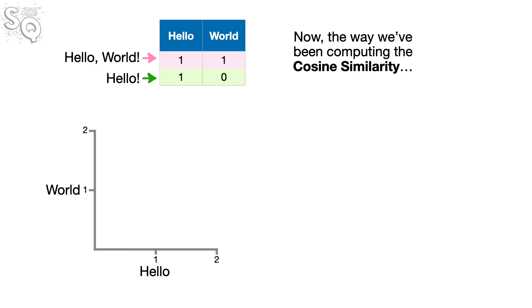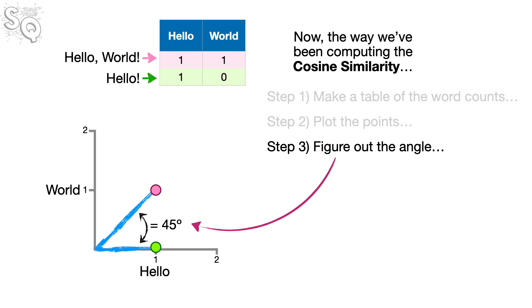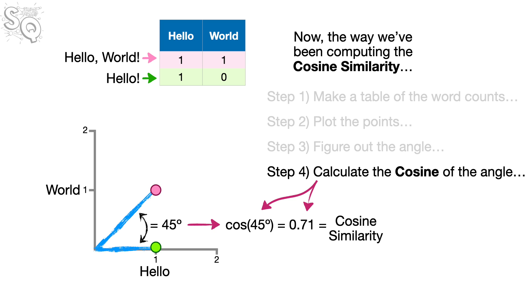Now, the way we've been computing the cosine similarity: step 1, make a table of the word counts; step 2, plot the points; step 3, figure out the angle; and lastly, step 4, calculate the cosine of the angle, is pretty tedious.